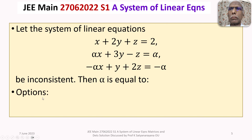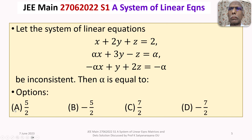Then alpha is equal to? We are given 4 options: Option A: 5 by 2, Option B: minus 5 by 2, Option C: 7 by 2, Option D: minus 7 by 2.